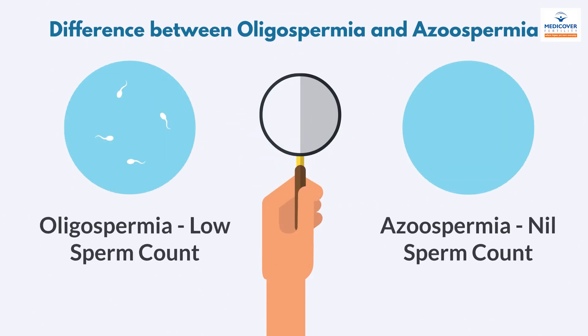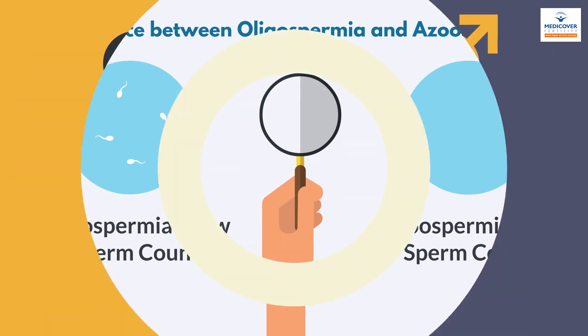Oligospermia is different from azoospermia. In oligospermia, the male has a very low sperm count.